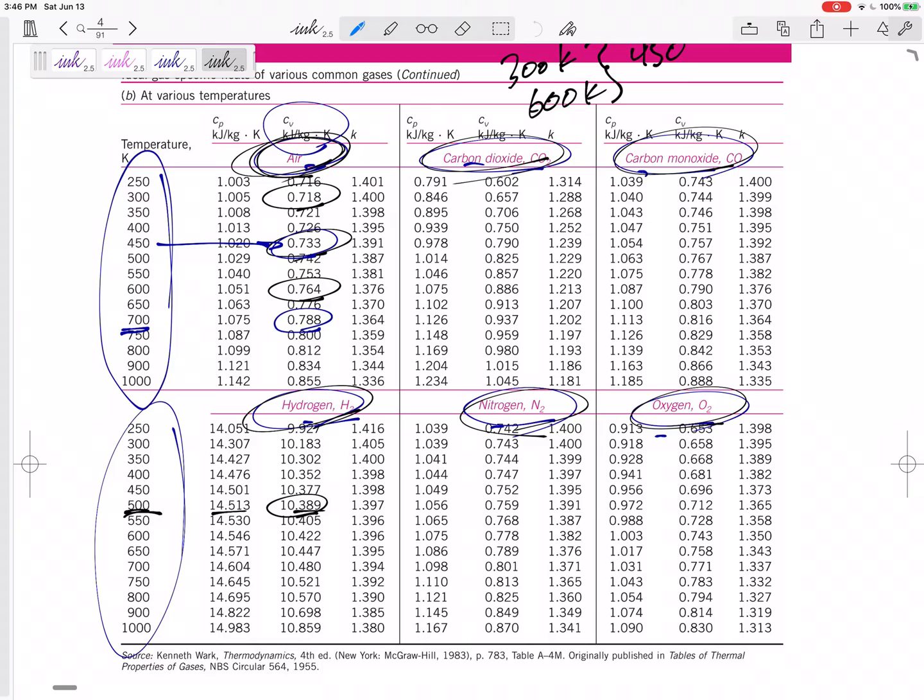Should I use it at - it starts at 300 kelvin - I don't know what it goes to, so I can't use it at T average. Let me just use it at the beginning. This is what I want you to do: use it at T1, and if your T2 is wildly different from T1, then redo the problem looking at kind of an average temperature between what you got.